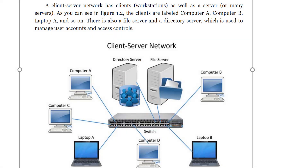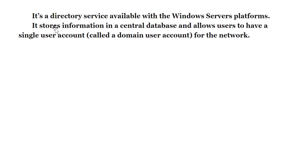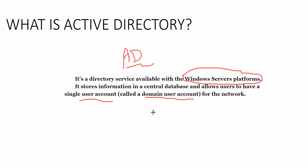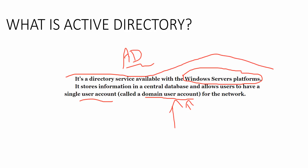The official definition: Active Directory is a directory service available with the Windows Server platform — it's not Linux. It stores information in a credential database and central database, and allows users to have a single user account called a domain user account. Whenever you add a user inside Active Directory, that user is by default a domain user account. You can then give it more rights — domain admin, enterprise admin — but the account type is called a domain user account.